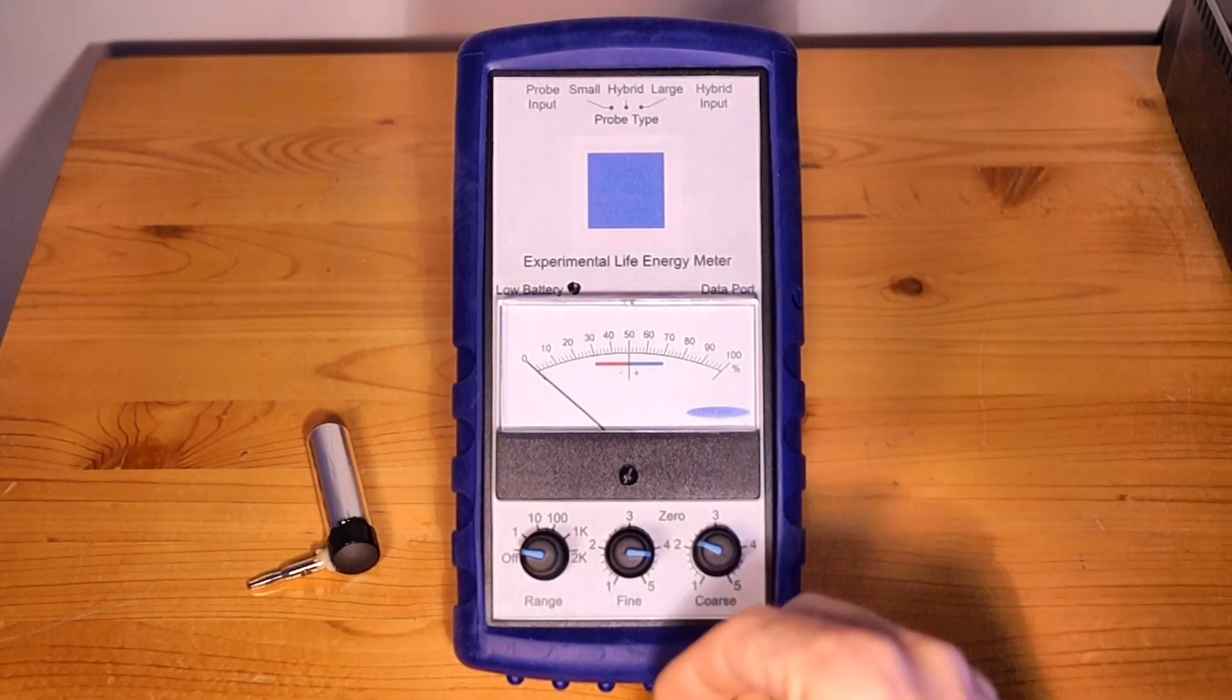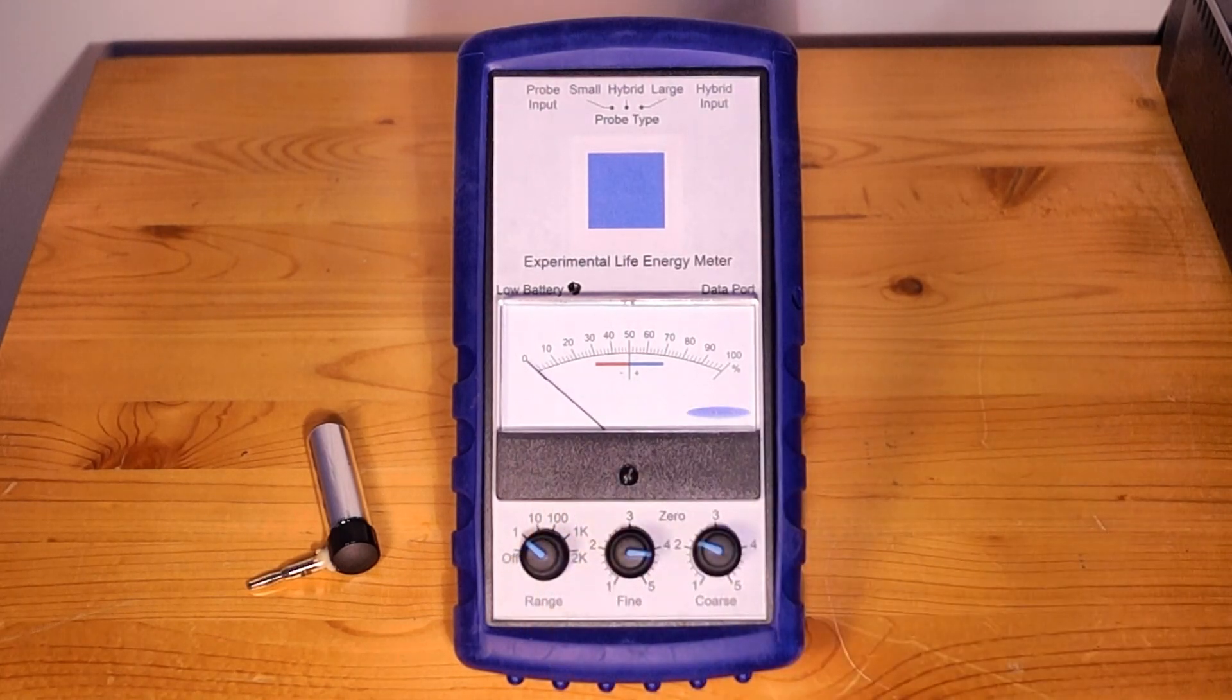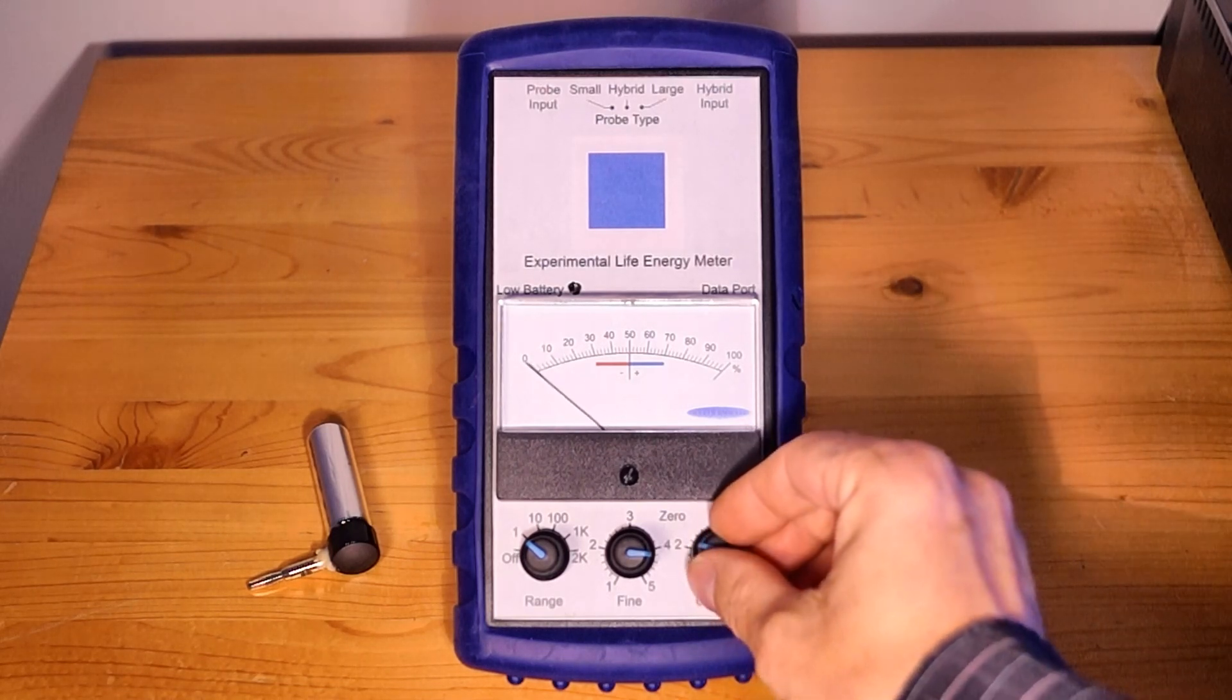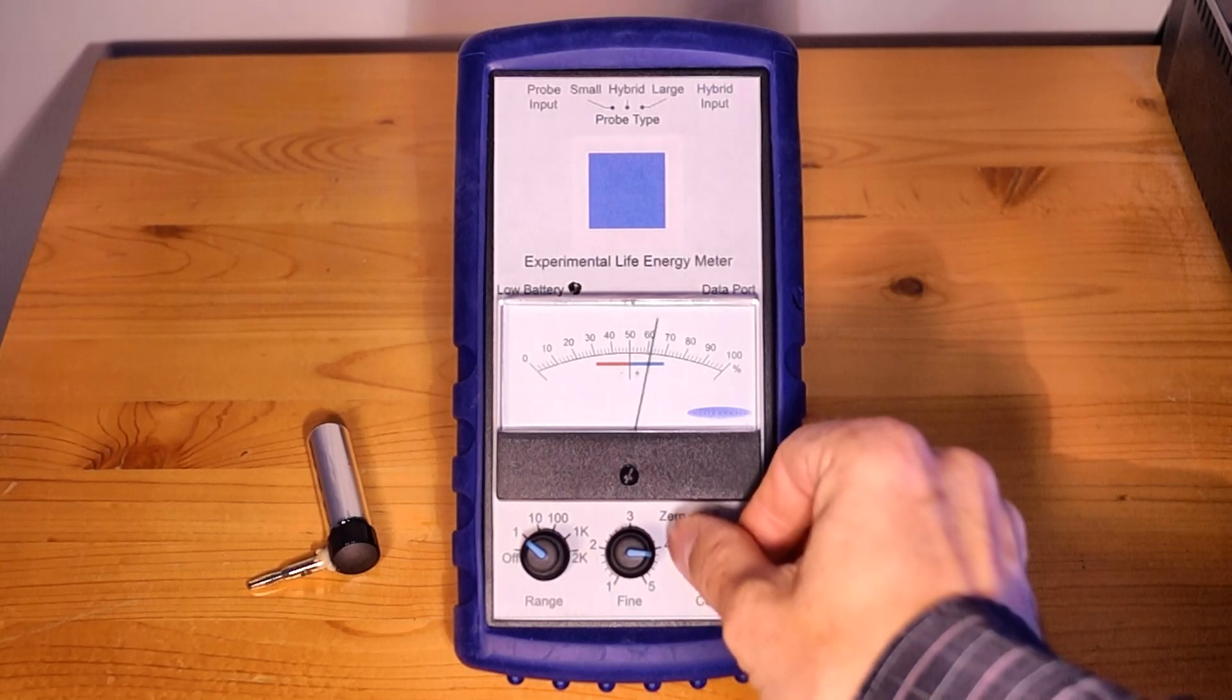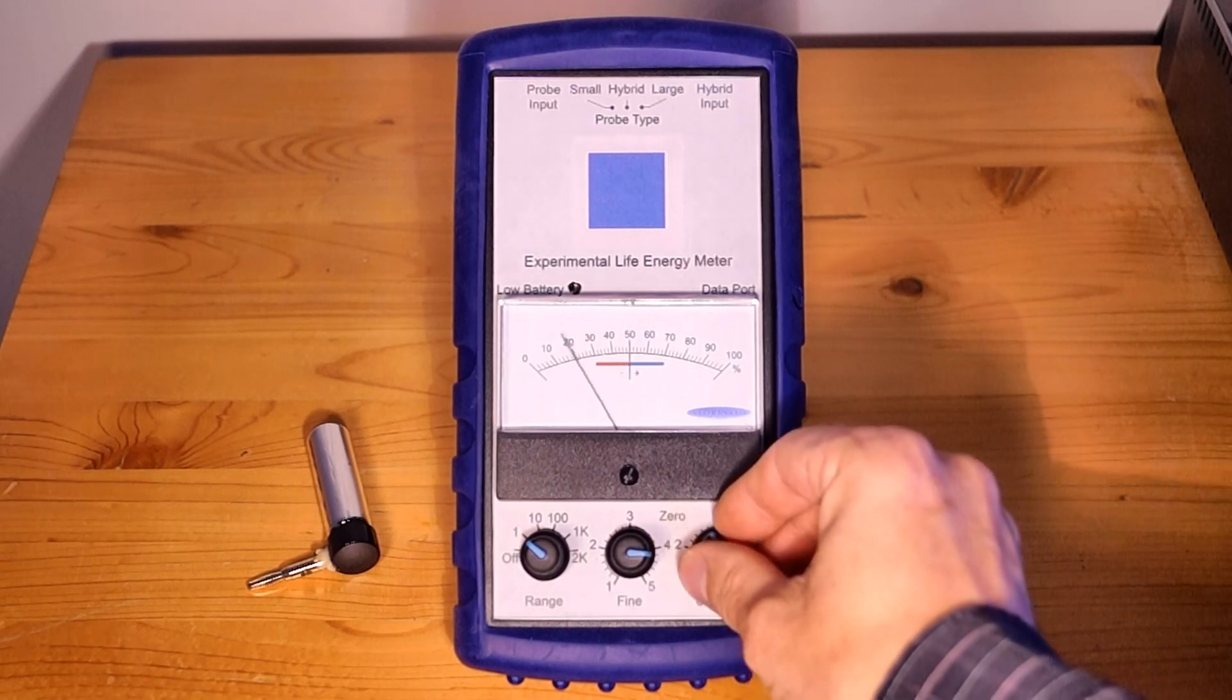How to use the controls on the LM4. First, turn the on-off switch to the one position. That's times one on the gain range. Right now, the needle is set for zero, but by adjusting the coarse, you can move it to any point you want. It could be 50%, typical use, or zero.